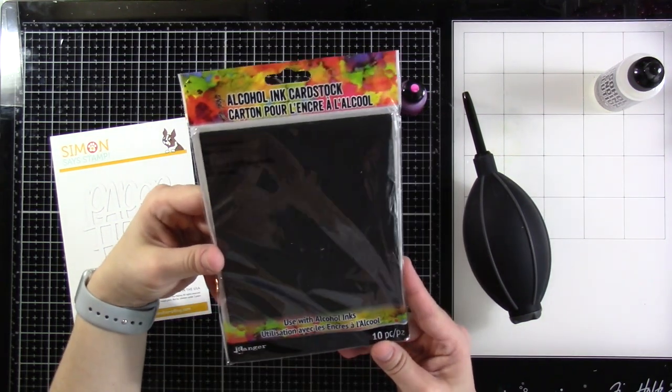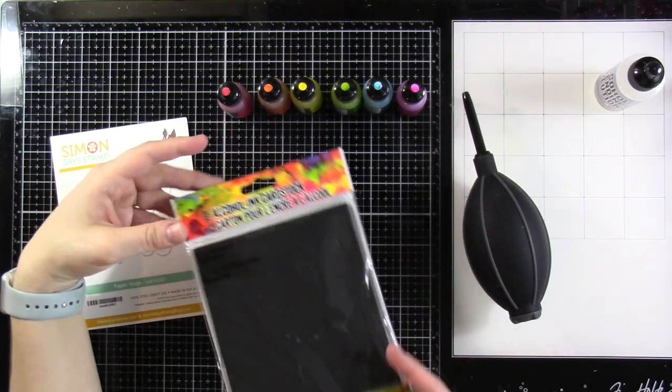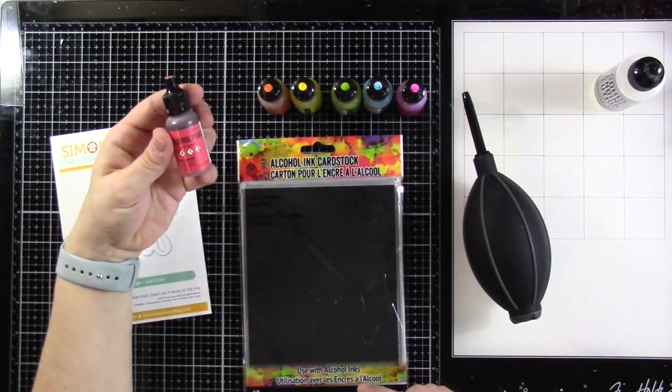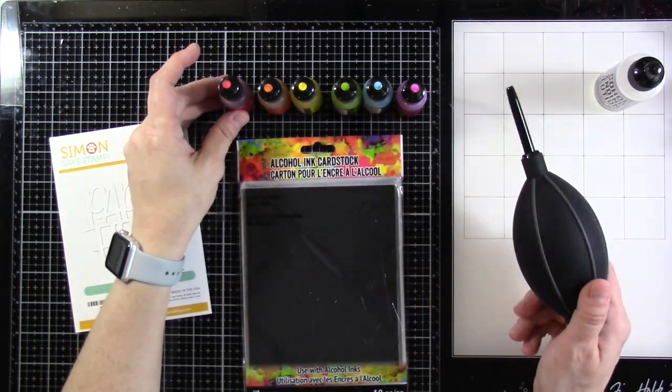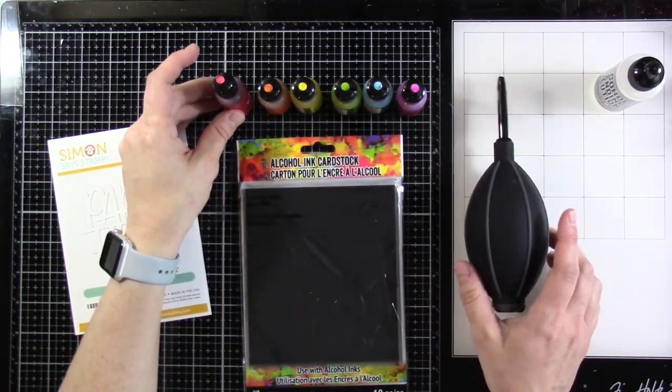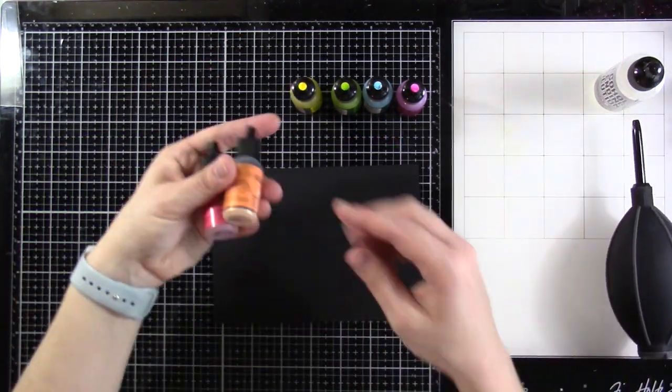We've got that Simon Says Stamp Paper Hugs Die. We also have some matte black 5x7 alcohol ink cardstock, and then we have some various alcohol pearls. I'll talk about those as I use them, but I have them in a rainbow of colors. And then we also have an alcohol blender or ink blower. We do have the blending solution, but I don't use that a whole lot.